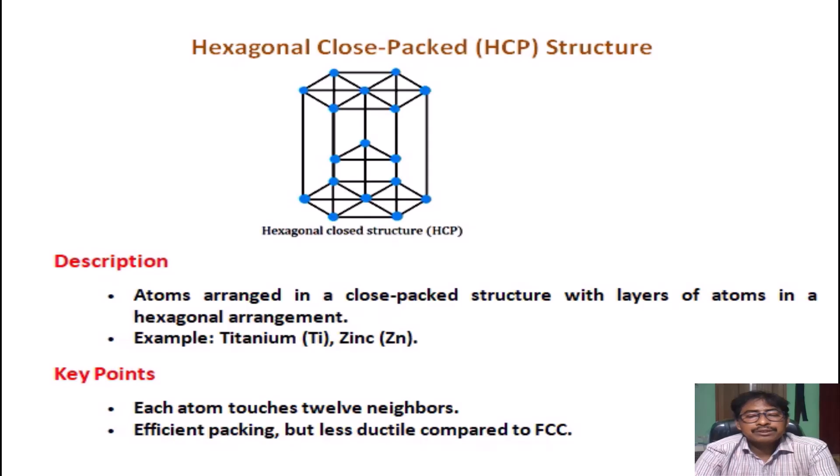Description. Atoms arranged in a close-packed structure with layers of atoms in a hexagonal arrangement. Example: Titanium (Ti), Zinc (Zn). Key Points. Each atom touches 12 neighbors.